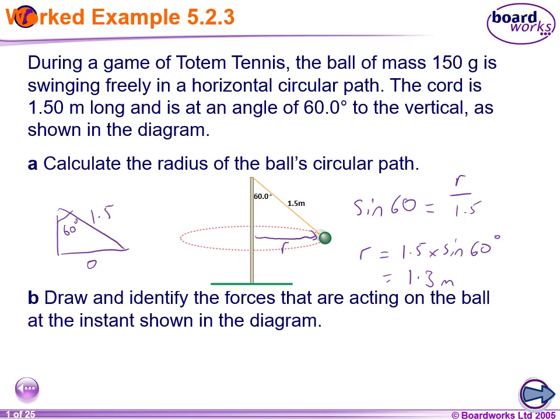Next, draw and identify the forces acting on the ball at the instant shown in the diagram. Okay, so there is our ball. Now at the instant shown in the diagram, we have gravitational force acting on it, mg. What else? Why isn't it falling down? Tension force. All right. So our tension force is in the same direction as the line. And so when we combine those two forces, we get a net force, look at that, into the center of the circle.